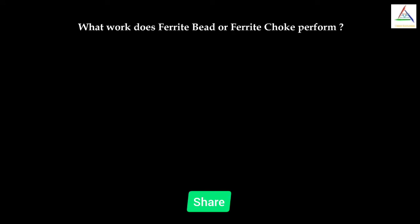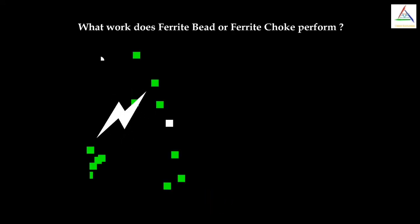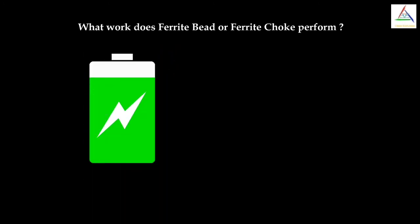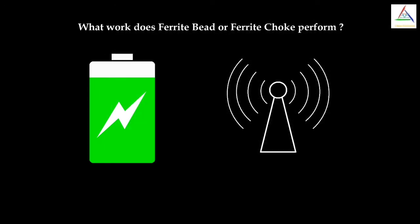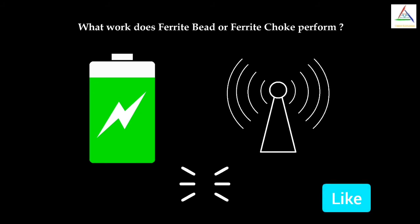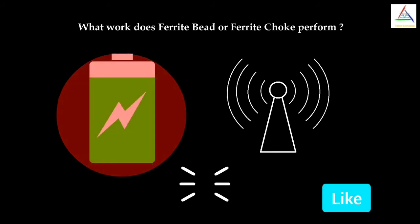Now let's see what work this ferrite bead performs. Electric current passes through the charging cable to charge up the device. This may lead the cable to act as an antenna that transmits and receives radio signals, creating interference with other devices and resulting in noisy signals. It also makes unnecessary use of electricity and prevents the charging cable from doing its job efficiently.